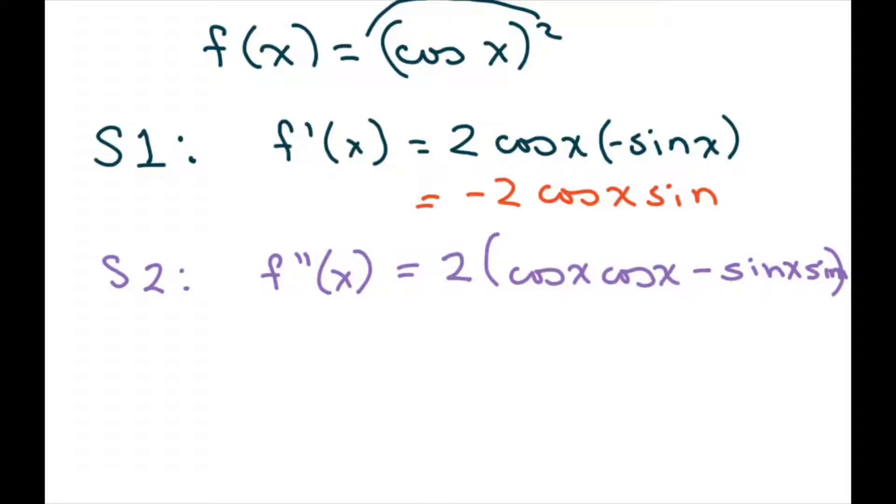So I took 2 cosine x and the derivative of sine x. So this is your u, and this is your v. And I wrote down cosine x, and then took the derivative of sine x. And then I wrote down sine x and took the derivative of cosine x, and that gives you the negative there.